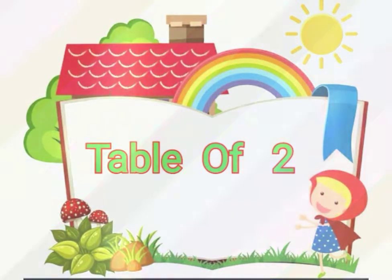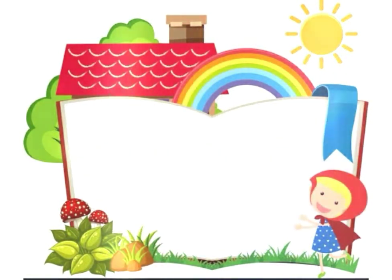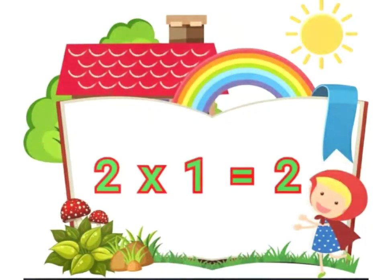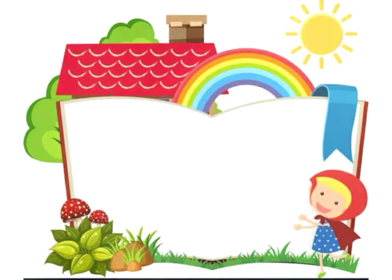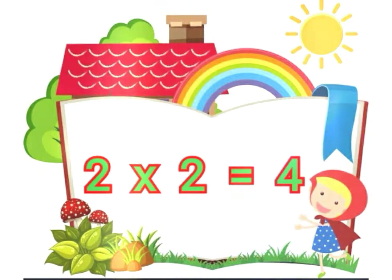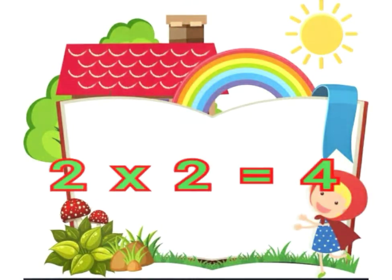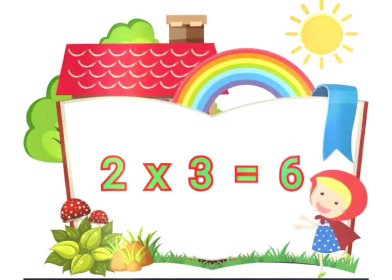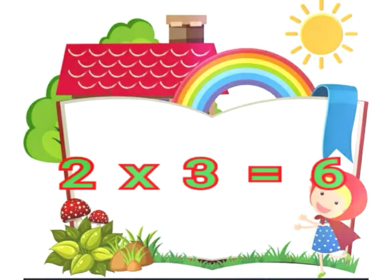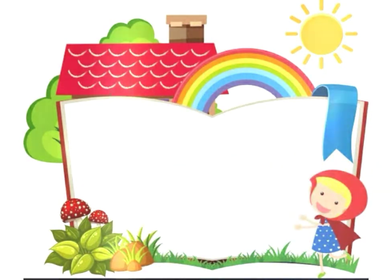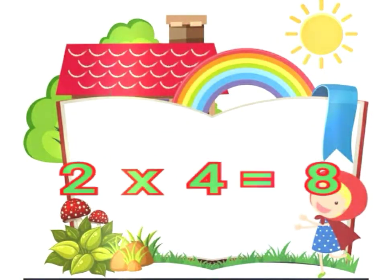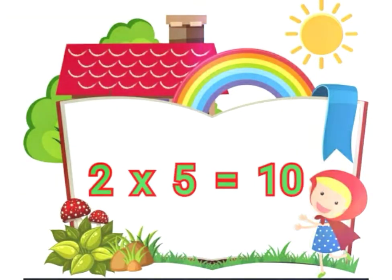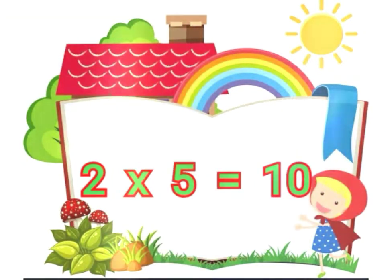Table of 2. 2 1's are 2. 2 2's are 4. 2 3's are 6. 2 4's are 8. 2 5's are 10.